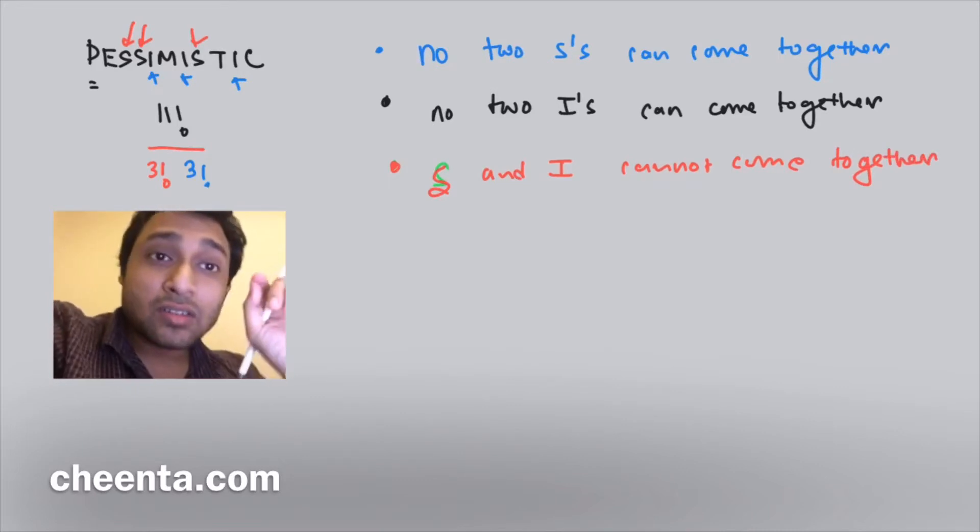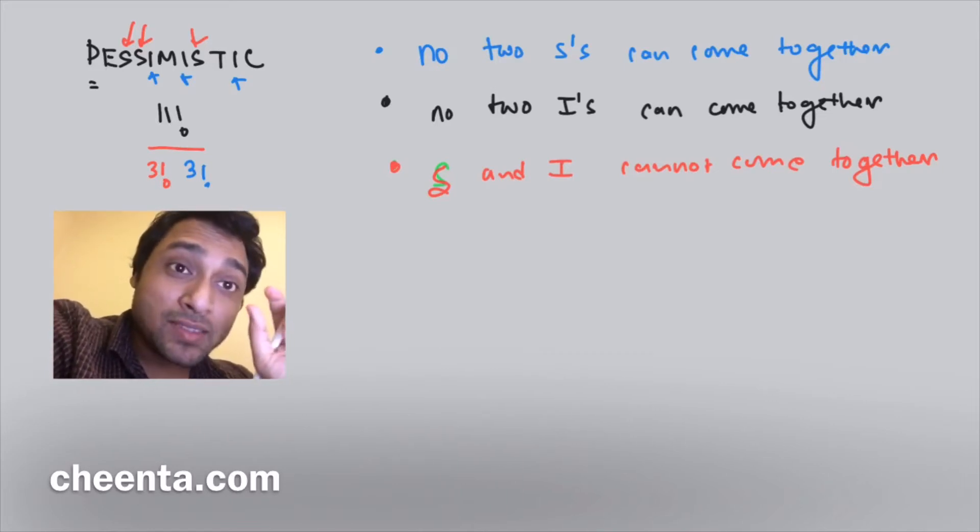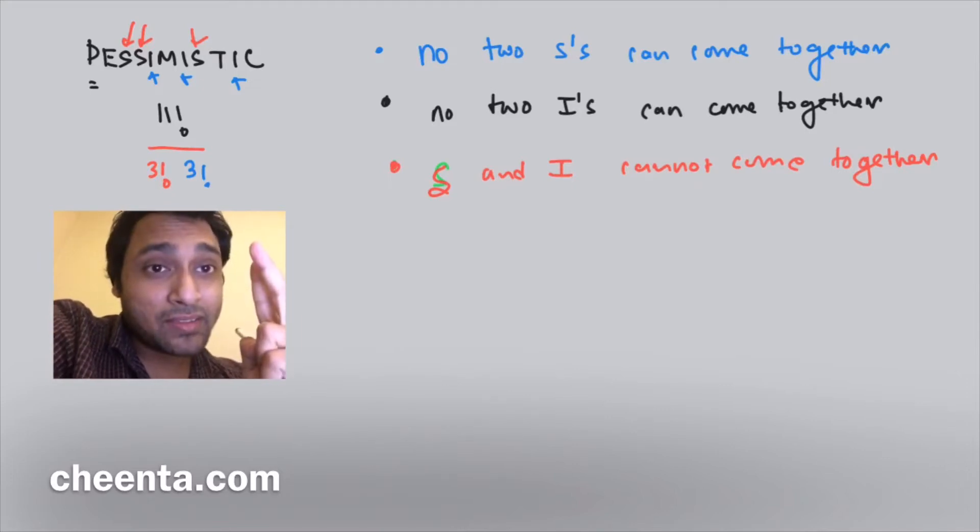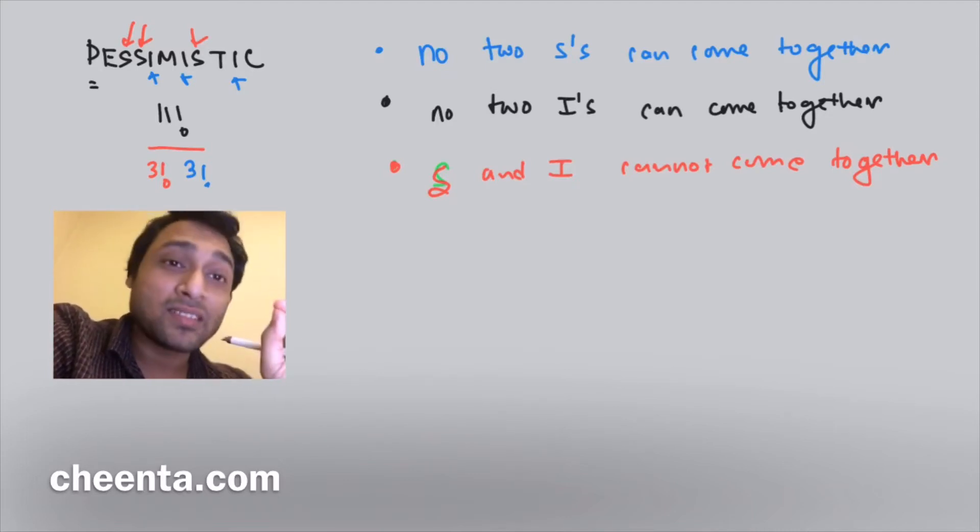We want not only the number of ways to rearrange the letters of the word pessimistic, we want to impose these additional conditions: no two S's can come together, no two I's can come together, and S and I cannot come together. Can you give it a try? Maybe you can pause the video and give it a try. It's not very hard.